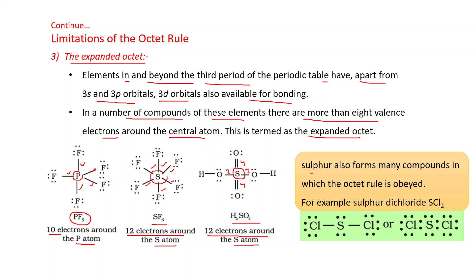However, sulfur also forms many compounds in which the octet rule is obeyed. For example, sulfur dichloride SCl₂ — if you count the electrons around the sulfur, eight electrons are there.